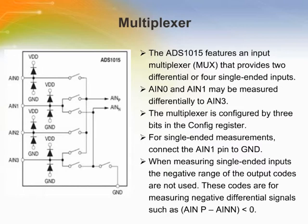The ADS1015 contains an input multiplexer. Either four single-ended or two differential signals can be measured. Additionally, AIN0 and AIN1 may be measured differentially to AIN3. The multiplexer is configured by three bits in the configuration register. When single-ended signals are measured, the negative input of the ADC is internally connected to ground by a switch within the multiplexer.